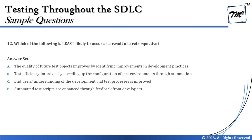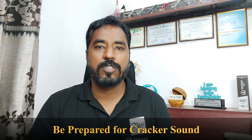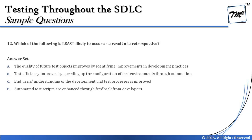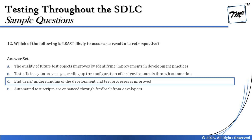Option D says automated test scripts are enhanced through feedback from developers. Yes, during the retrospective, developers can give feedback on how exactly your automation scripts can be improved, because code changes may invite updates to object properties and attributes, thus requiring you to update your automated scripts. So three options are talking about retrospective, and one is not — and that's the right answer. The right answer for this question is C: end users' understanding of the development and test process is improved is least likely to be an objective of a retrospective.